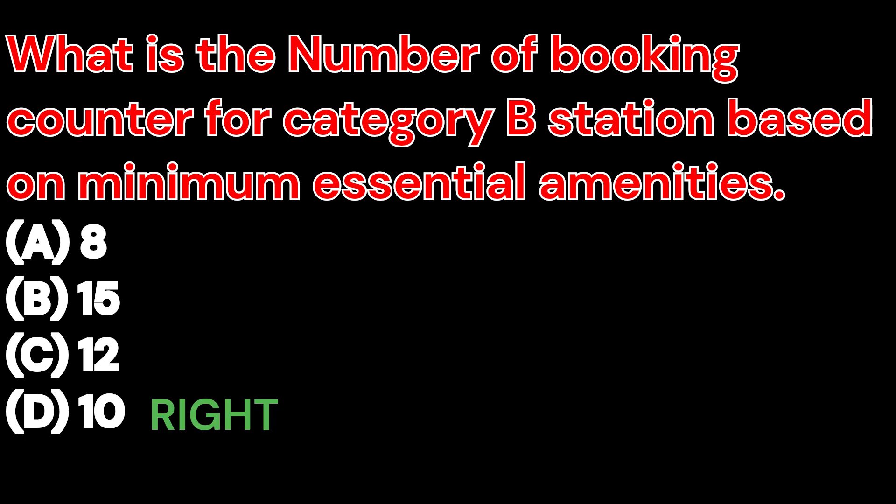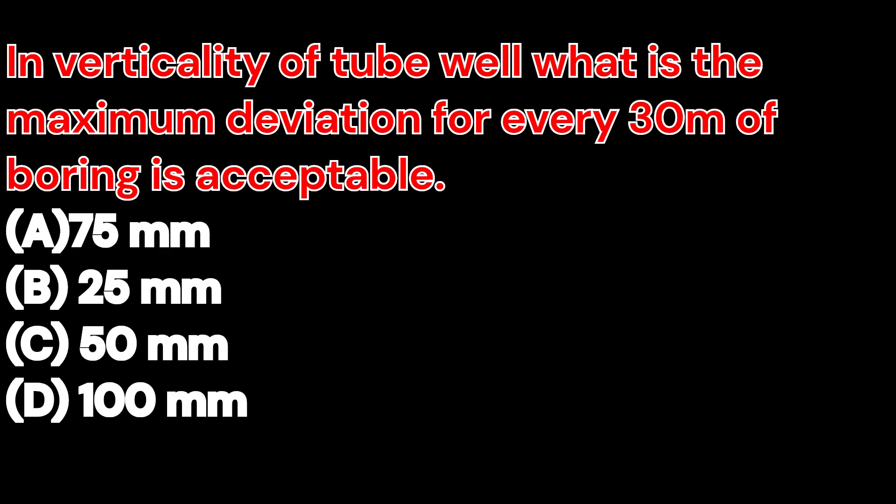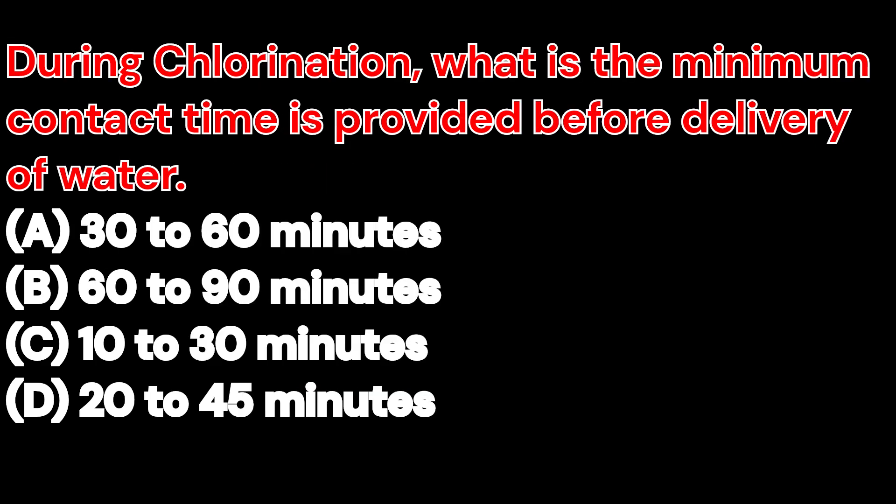In verticality of a tube well, what is the maximum deviation acceptable for every 30 metres of boring? A. 75 mm. B. 25 mm. C. 50 mm. D. 100 mm. And the right answer is 100 mm.